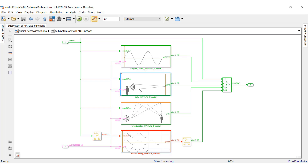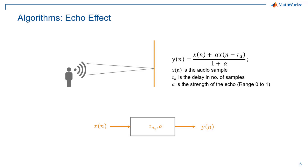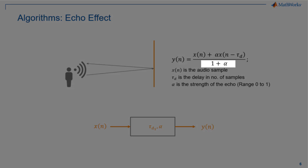Our second MATLAB function block implements the echo audio effect. The echo effect is simply a superposition of current and delayed audio samples, allowing one to perceive the present as well as past audio samples simultaneously. The output is a weighted sum of the present and past audio samples. The parameter alpha controls the strength of the echo. Tau D is the number of delayed samples corresponding to the actual delay in seconds. The final output equation is normalized using the expression 1 plus alpha to take care of sound saturation during playback.